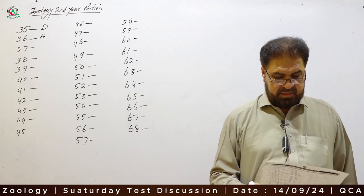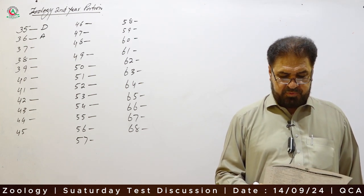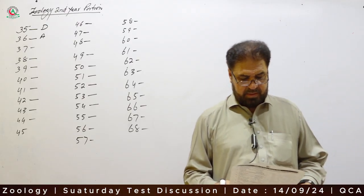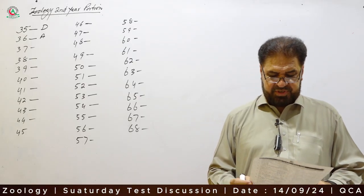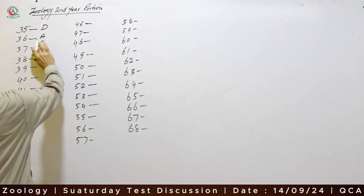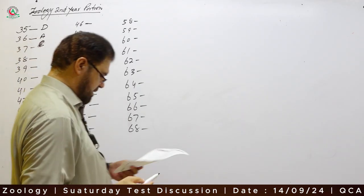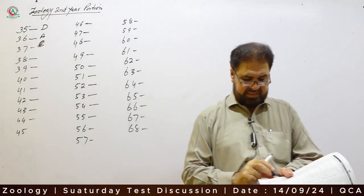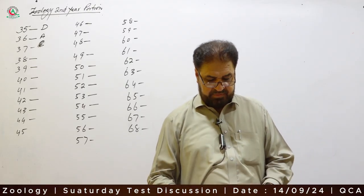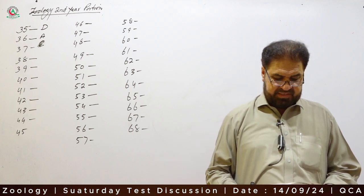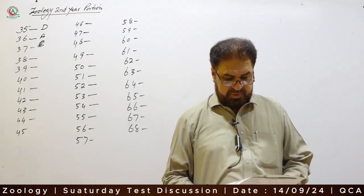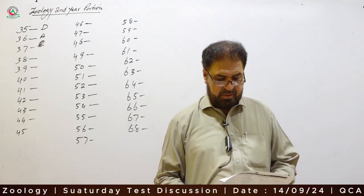Question 37: The lower end of pharynx extends up to which cervical vertebrae? Correct answer is Option C — 6th cervical vertebra. There are 7 cervical vertebrae, but pharynx extends up to the level of the 6th. Question 38: The apex of the lungs extends beyond which rib?